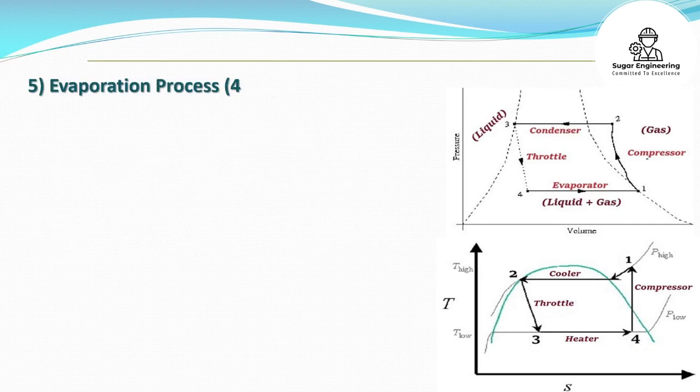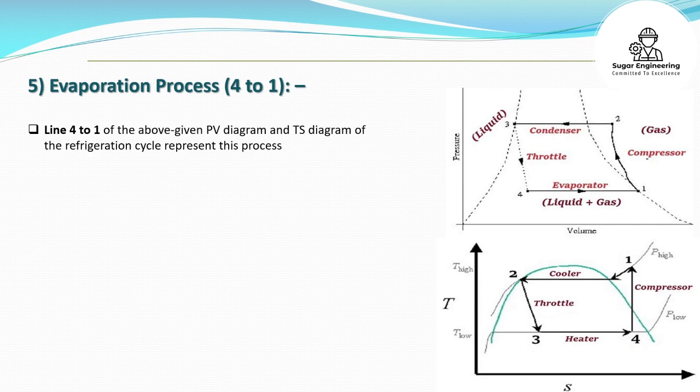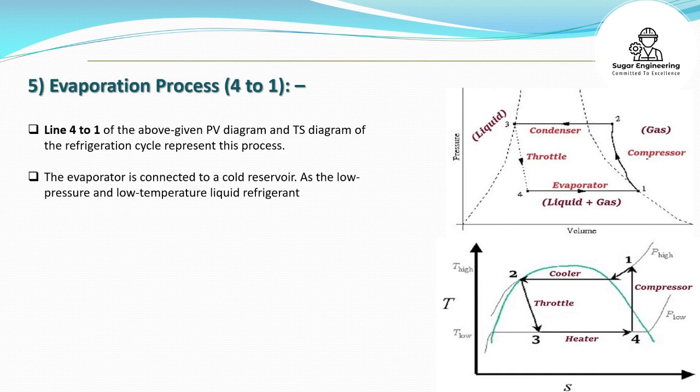5. Evaporation Process (4 to 1): Line 4 to 1 of the above given PV diagram and TS diagram of the refrigeration cycle represent this process.